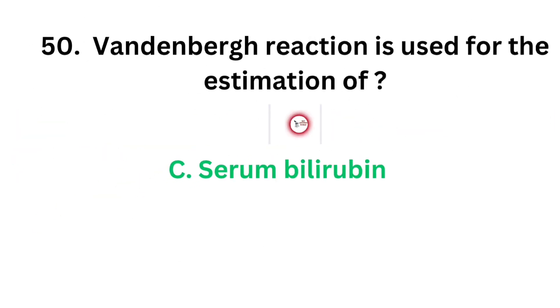The correct answer is option C, serum bilirubin. Van der Berg reaction is used for the estimation of serum bilirubin.